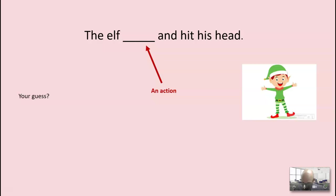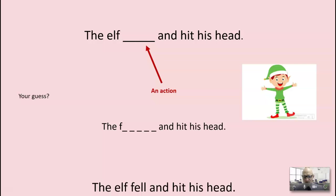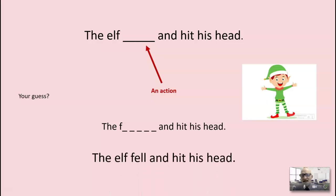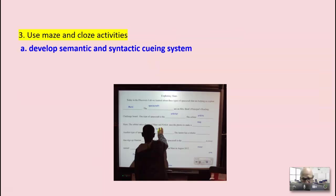And we write some of those down. And then I give them a one-letter clue. Want to change your ideas? Yes, the elf fell and hit his head. We teach it specifically. And we do a lot of maze and close activities to develop the semantic and syntactic cueing system.